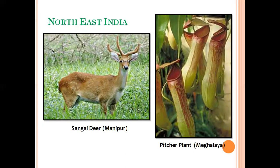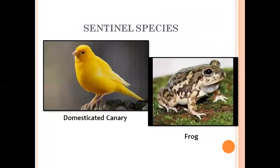Now let's look at sentinel species. Sentinel species are actually a kind of indicator species, but they are specifically animal species. They act as an early warning system — showing some kind of advance warning if there is any unwanted change in the environment in terms of pollution or harmful chemicals.